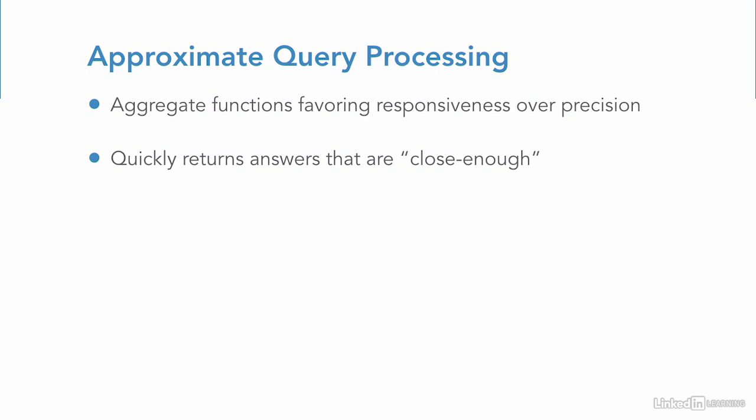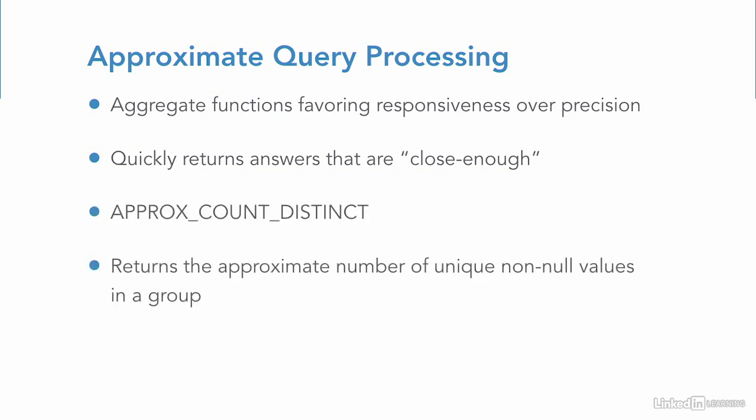For very large datasets, it's sometimes beneficial to quickly get an answer that's close enough to be actionable rather than to take all day to get an exact answer. For now, this new family simply contains a new aggregate function called approximate count distinct, which returns the approximate number of unique non-null values in a group.